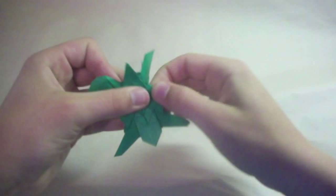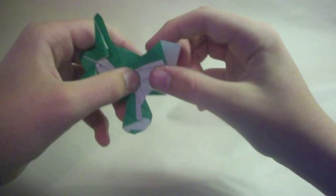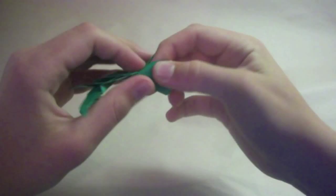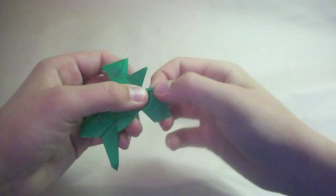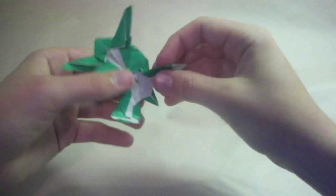Reverse fold here. Then a valley fold. And another valley fold except making the foot three dimensional. And then just round off the foot.